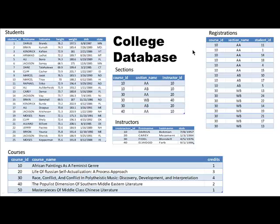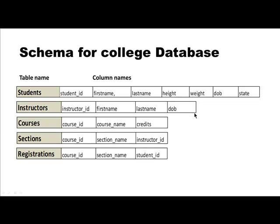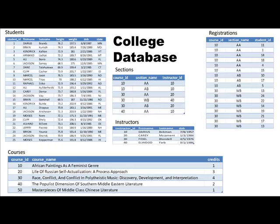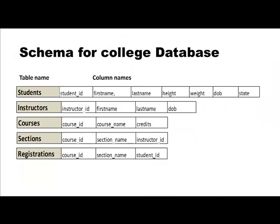In database theory we sometimes refer to the structure of a database as its schema. Here we are looking at the structure of the tables as well as the actual data in the tables. To construct SQL you don't necessarily need to see the actual data, though it's useful for verifying your queries. Given just the schema, you can build the SQL. The schema gives the name of the table and all the columns — we are not showing the actual data itself. Our college database schema has tables: students, instructors, courses, sections, and registrations.